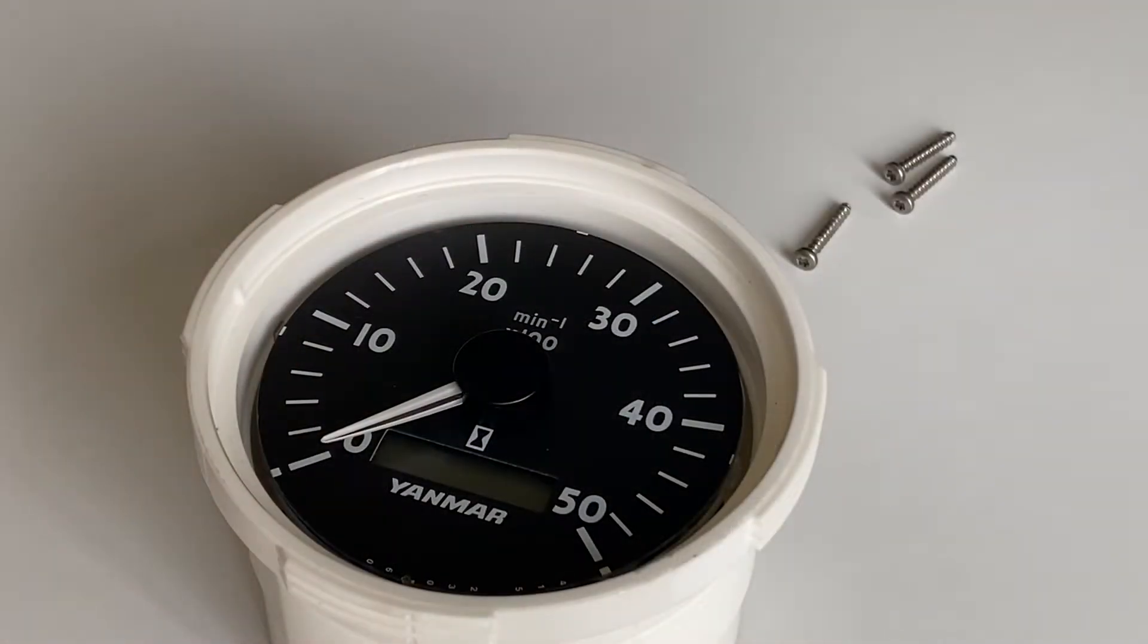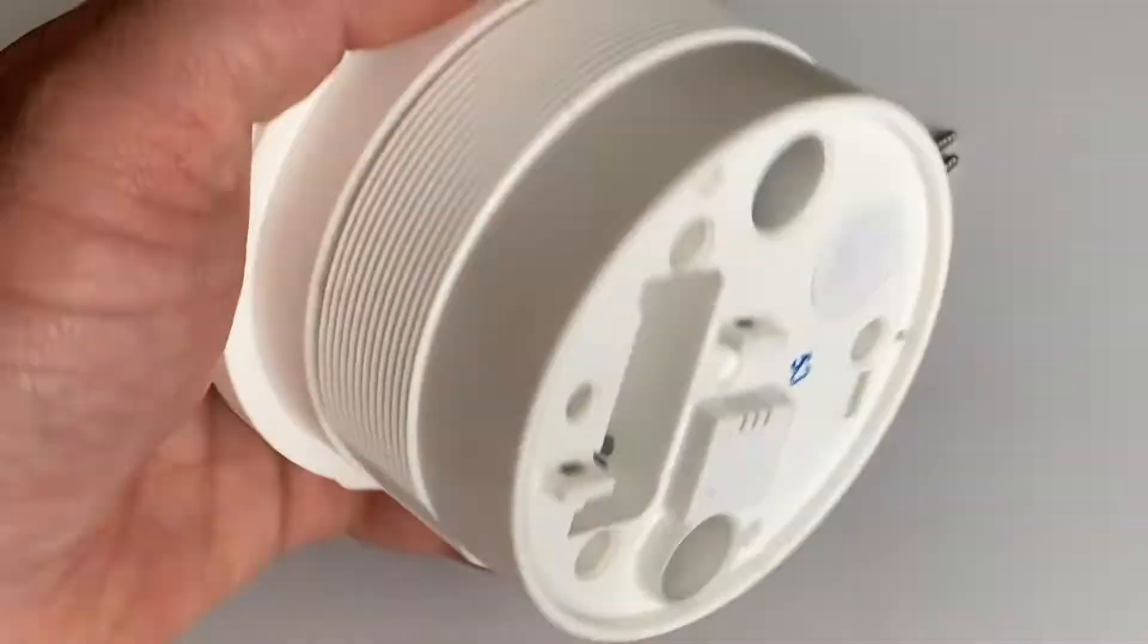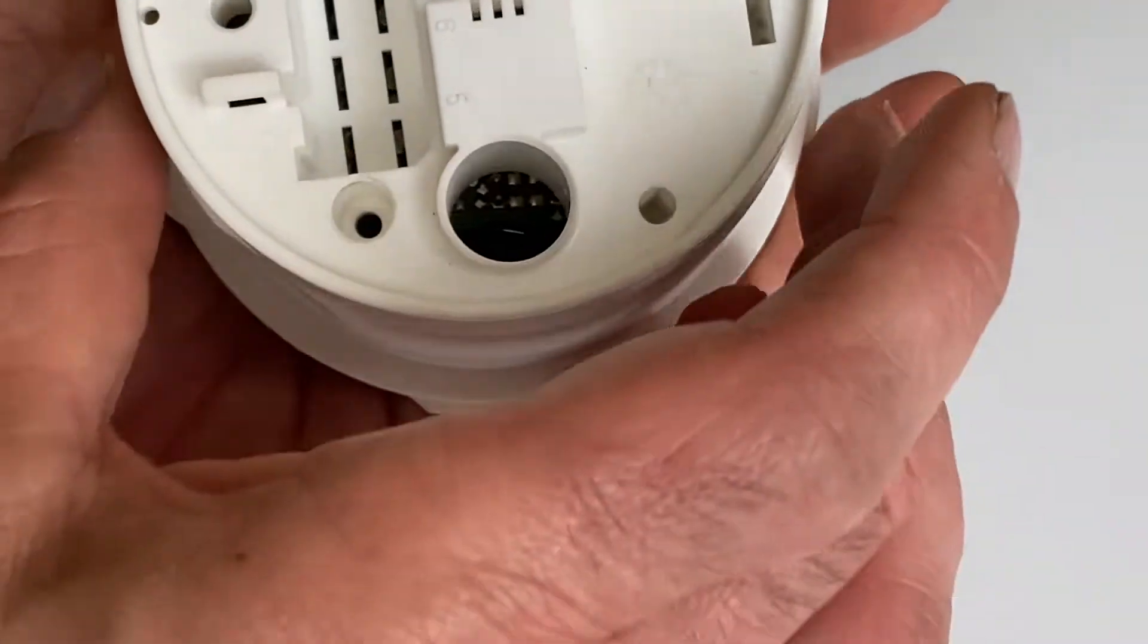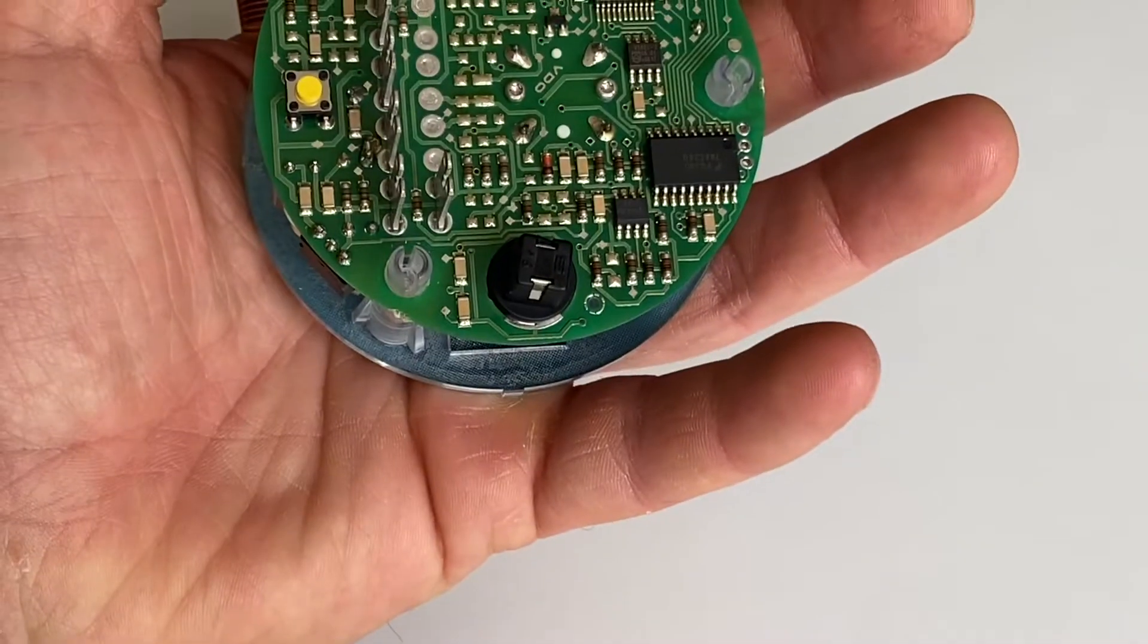Once you've removed the three torque screws, just place the tach in your hand, flip it upside down. I'm applying a little bit of pressure on the prong. That should slide right out.